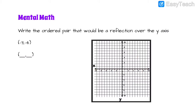Alright, let's try another one: negative 3, negative 4. We're going over the y-axis this time. So negative 3, negative 4 — right there. Let's reflect it over the y-axis. Pause the video and then click play when you're ready to go on. You should have realized that the negative 4 stayed the same, and instead of negative 3 we're having a positive 3 — we have to go over this way instead of backwards. So we've got 3, negative 4.